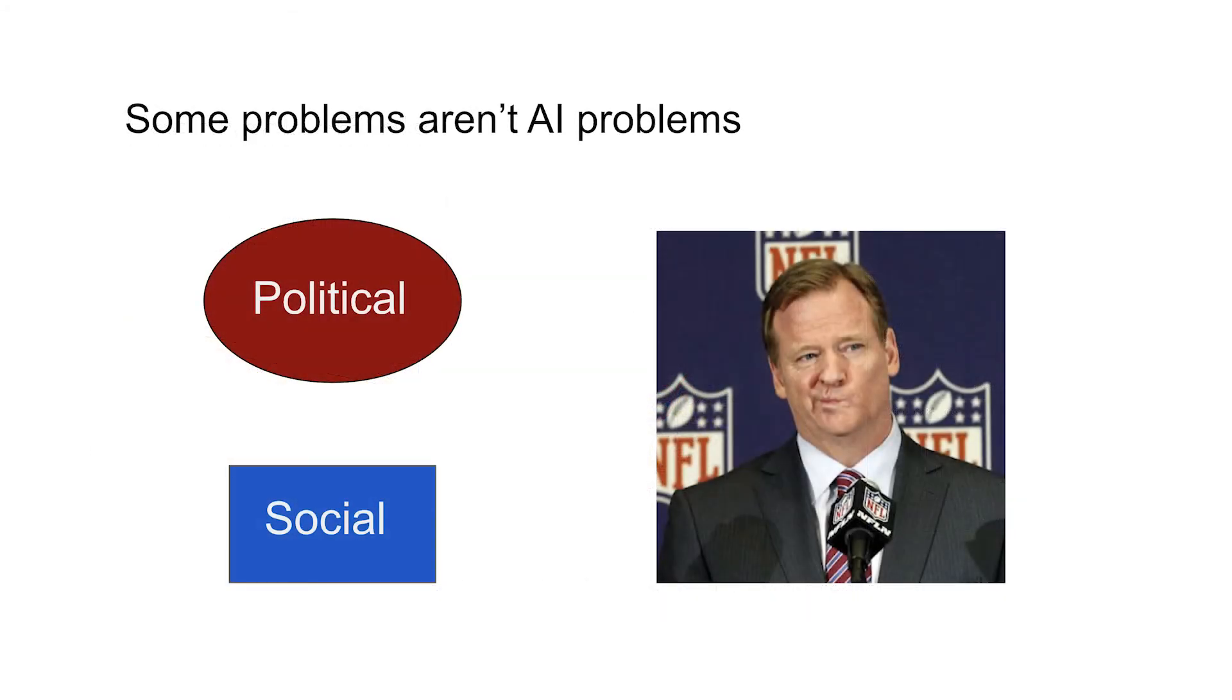So another thing to think about is that oftentimes problems aren't even AI problems at all. So there are lots of problems that involve humans getting together to make decisions as collectives. For example, political problems or to deal with emotional or relationship issues like social problems. And in many cases, just computers aren't there to solve these problems for us. These are human-human problems that involve conflict resolution and other very important discussions that we just can't program a computer to tell us the right solution.